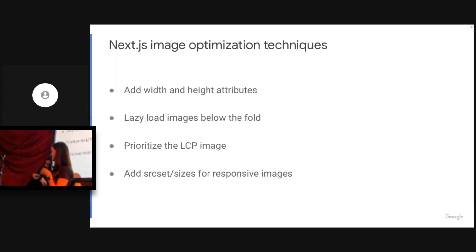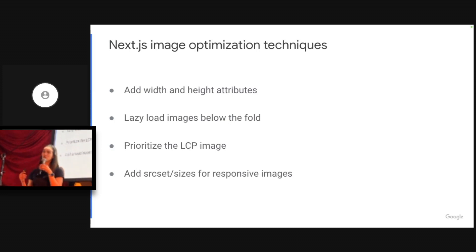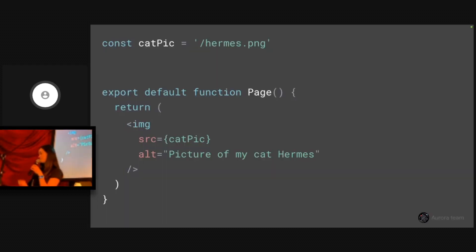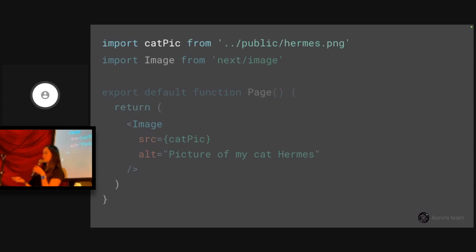Let's start with Next.js. When we were designing this component, we wanted to make sure that common optimization techniques were really easy — things like adding width and height to prevent layout shift, lazy loading images to reduce resource contention, priority hints, preloads, responsive image support. Here we have a normal Next.js page with a regular image tag. We import the image reference from the next image package, replace the image tag with the image component, and update the source string to a direct import of that image file. And that's it — we're migrated.